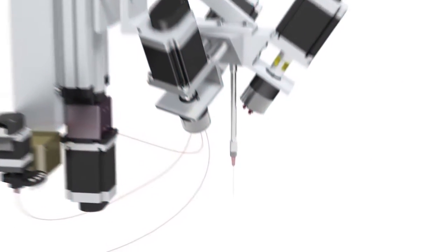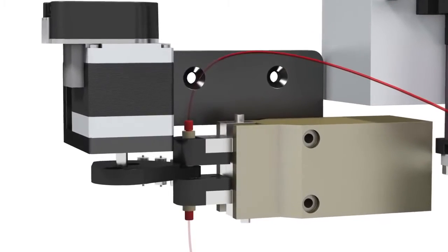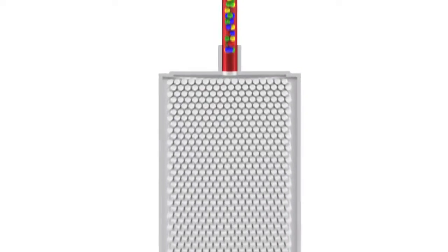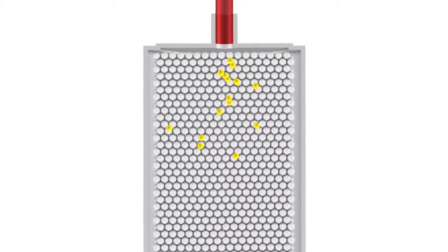Samples are loaded onto the SPE cartridge using an aqueous wash. Analytes of interest are trapped on the cartridge where salts, buffers, detergents and large proteins are washed through.